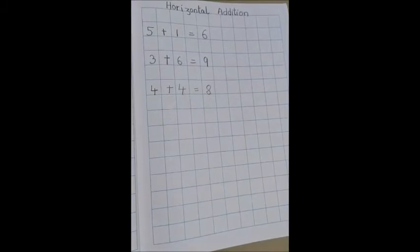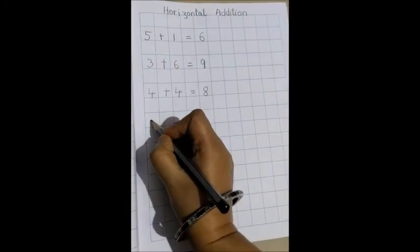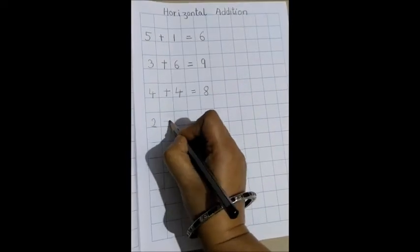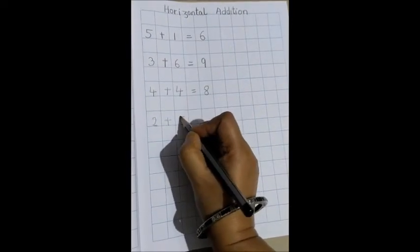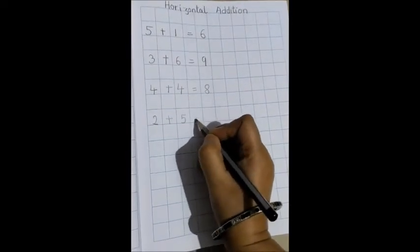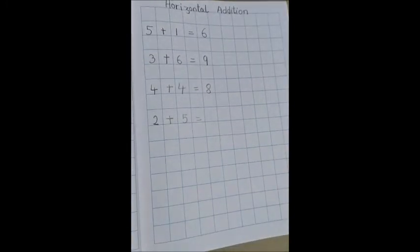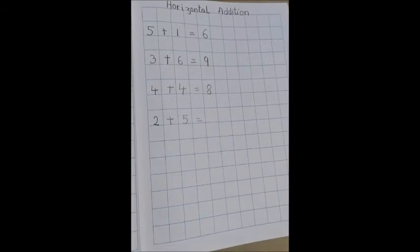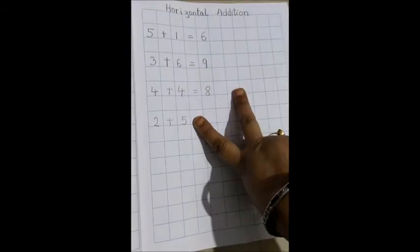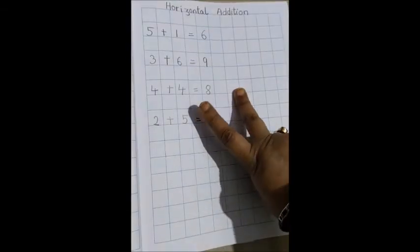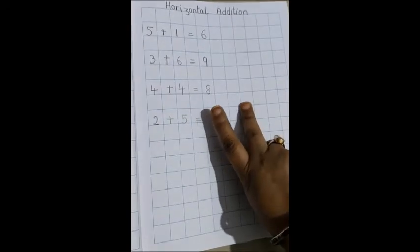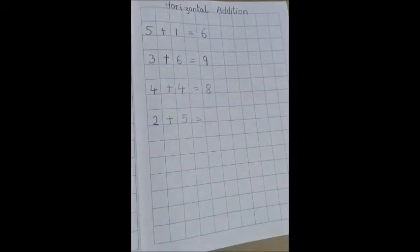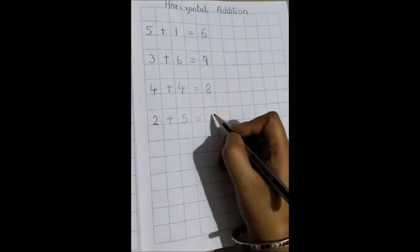Now the next sum. 2 plus 5 equals to. So now 2 and 5, which is the bigger number? 5 is the bigger number. So how many fingers out? 2 fingers out. So after 5 what will come? 6 and 7. So what will be the answer? 7.